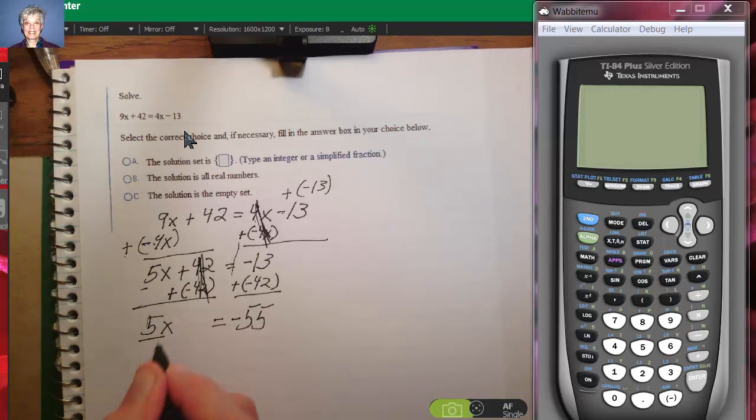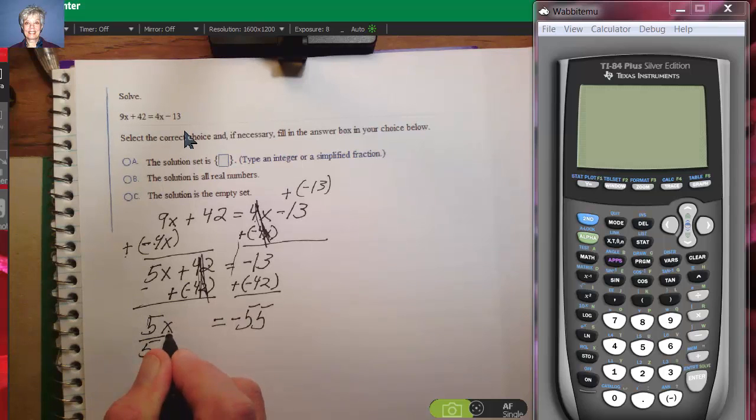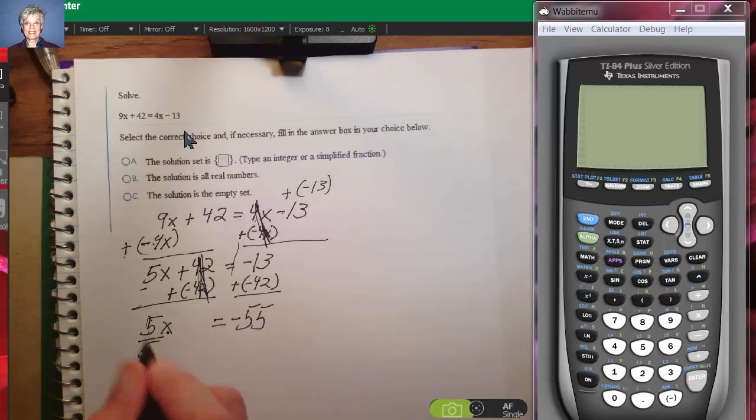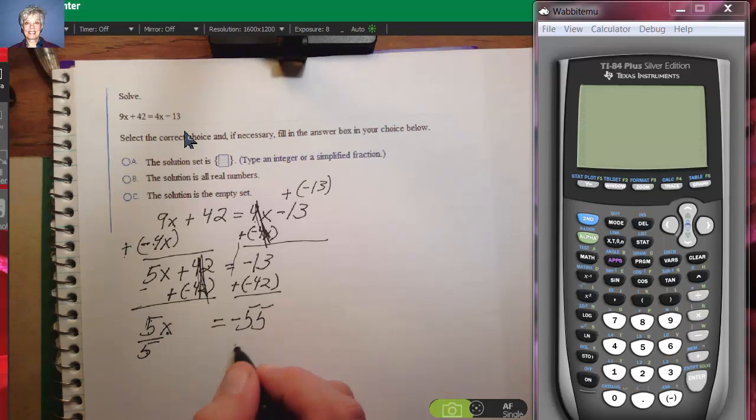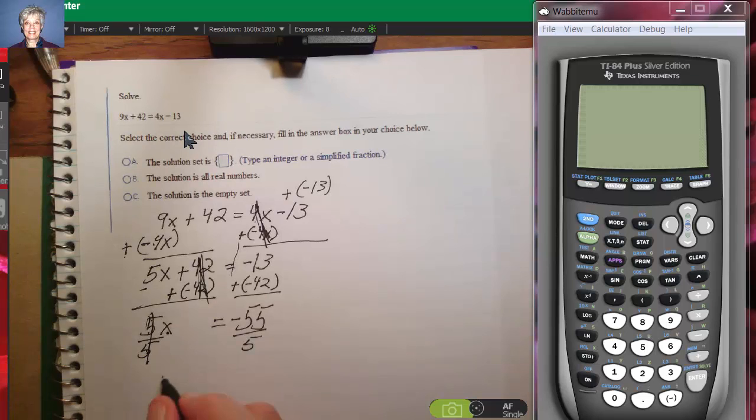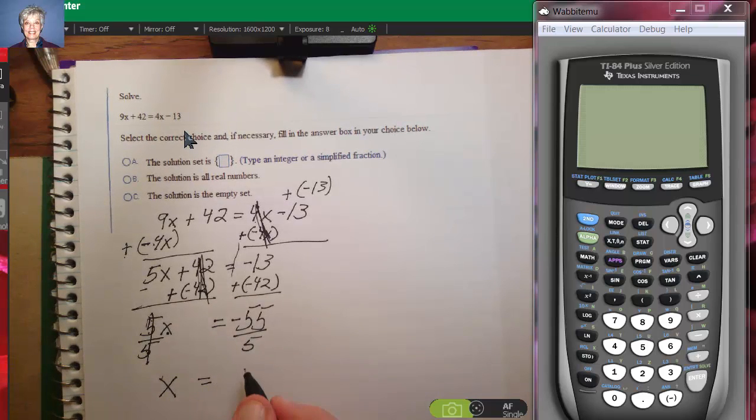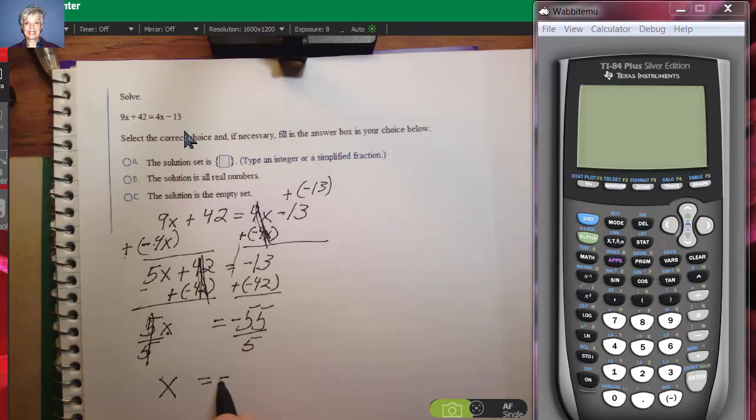I'm going to divide both sides by 5 because now I've got 5 times x and I divide by that coefficient. These 5s cancel out, leaving me with x. Over here I'm going to have negative 55 divided by positive 5. Negative divided by positive is negative and 55 divided by 5 is 11.